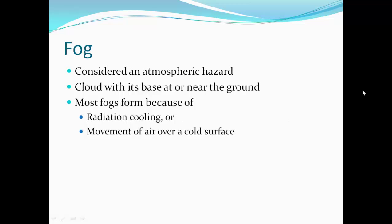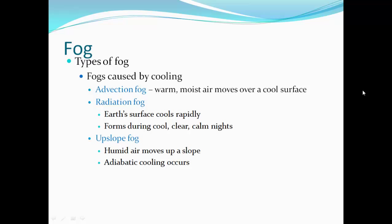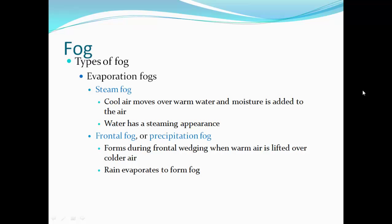Fog is considered an atmospheric hazard. It's a cloud whose base is at or near the ground. Most fogs form because of radiation cooling or movement of air over a cold surface. Types of fog caused by cooling: advection fog — warm moist air moves over a cool surface; radiation fog — Earth's surface cools rapidly, forms during cool, clear, calm nights; upslope fog — humid air moves up a slope until adiabatic cooling reaches dew point. Evaporation fog, or steam fog, forms when cool air moves over warm water. Frontal or precipitation fog forms during frontal wedging when warm air is lifted over colder air and rain evaporates to form fog.